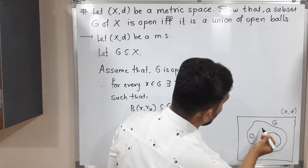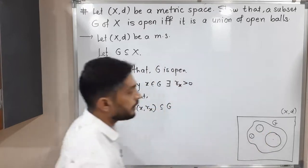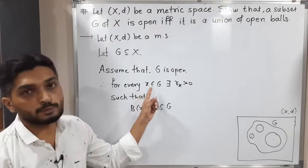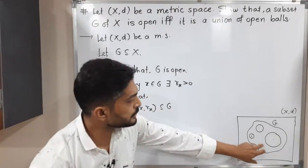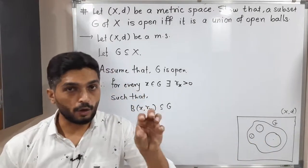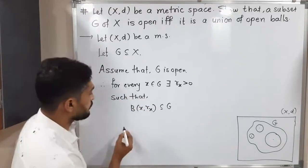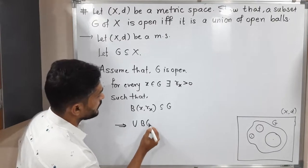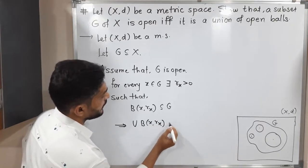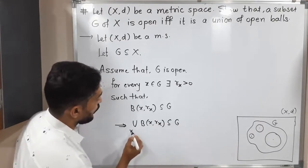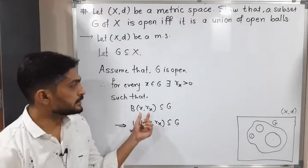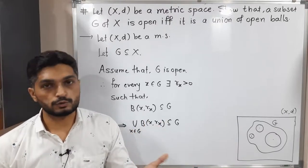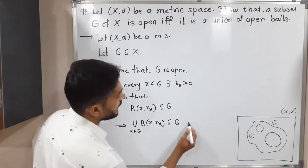For each x belonging to G, it is possible to find a ball around it which is a subset of G. So therefore, since each ball B(x, R_x) is a subset of G, their union — the union of B(x, R_x) for all x belonging to G — is also a subset of G. Since each ball is a subset of G, the union of all such balls is also a subset of G. I am calling this result (1).